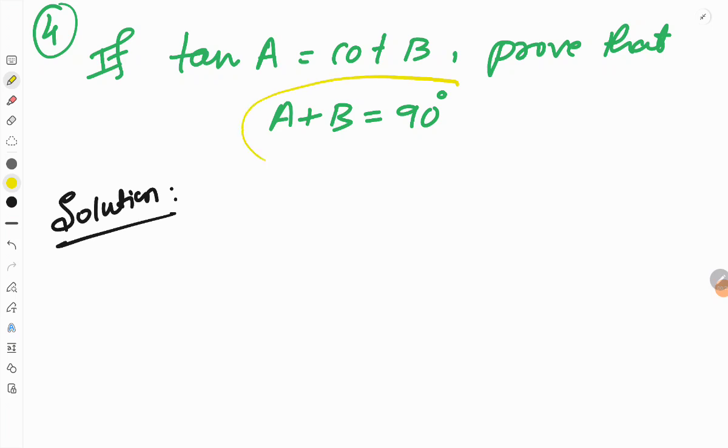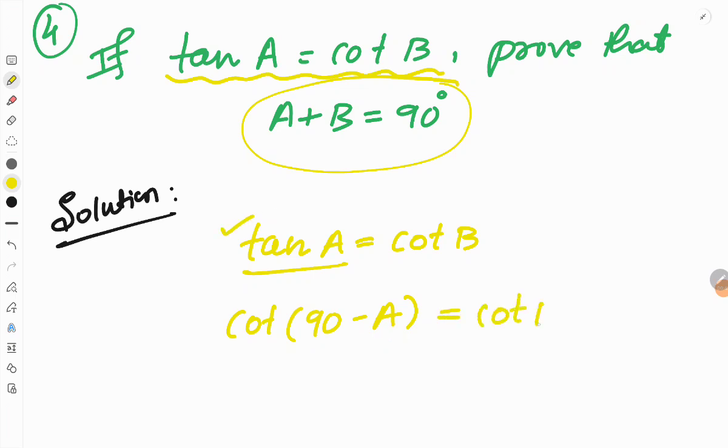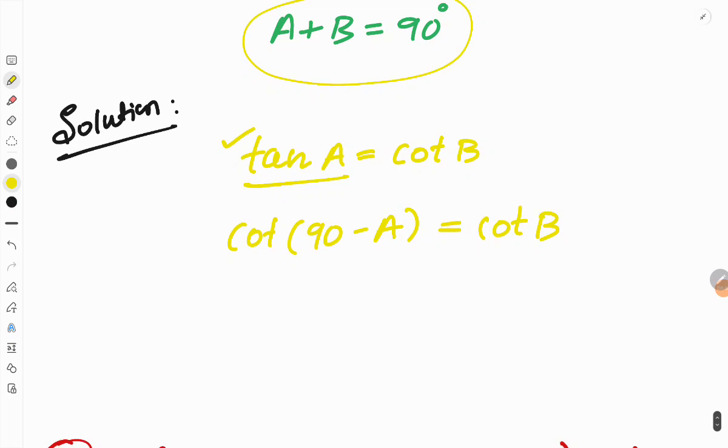You can write the answer immediately. Tan A equals cot B. Tan A can be written as cot of 90 minus A. This is the standard formula, so cot of 90 minus A equals cot B.